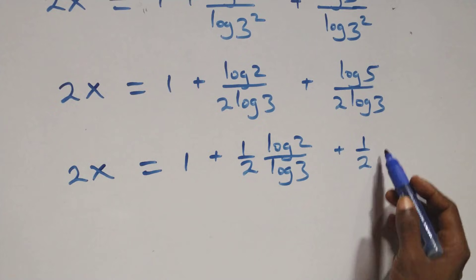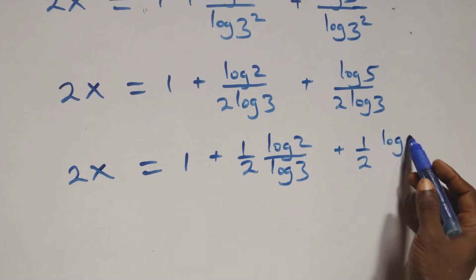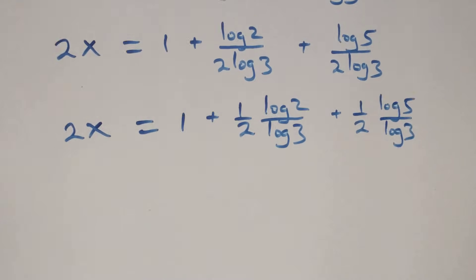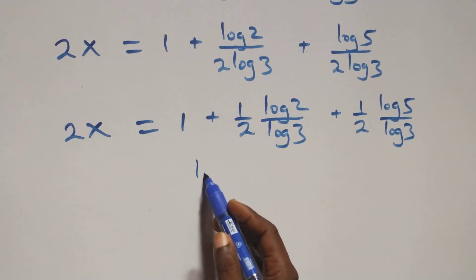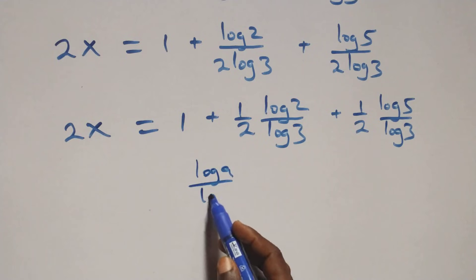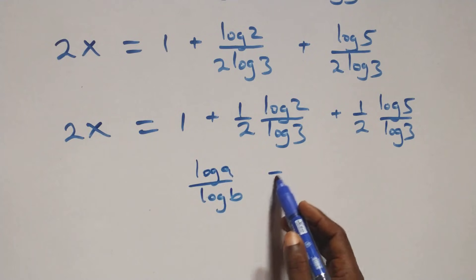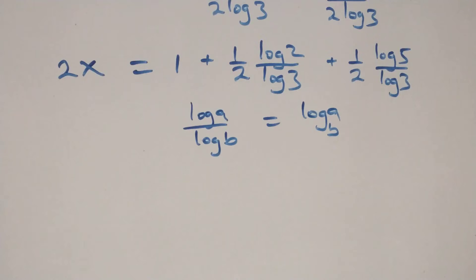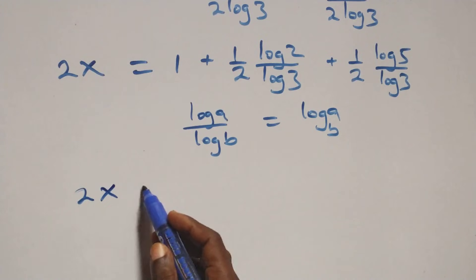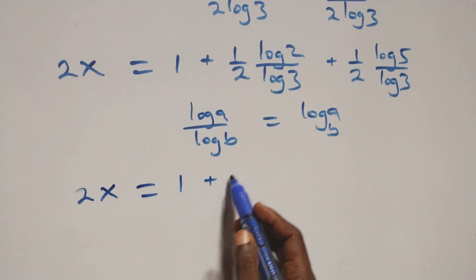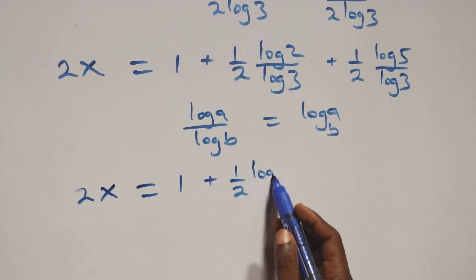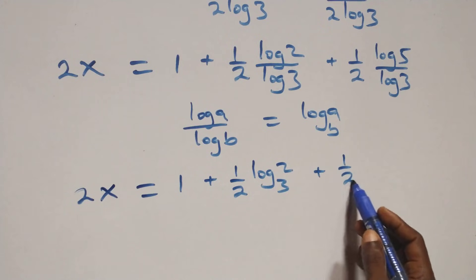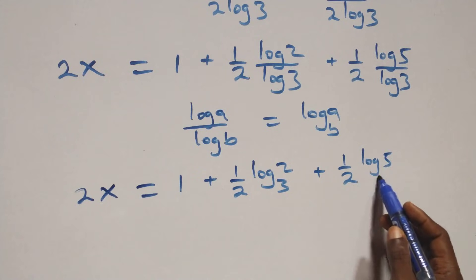Then we apply the change of base formula: log a over log b is the same as log a to base b. So here we have 2x equals to 1 plus one-half times log base 3 of 2, plus one-half times log base 3 of 5.